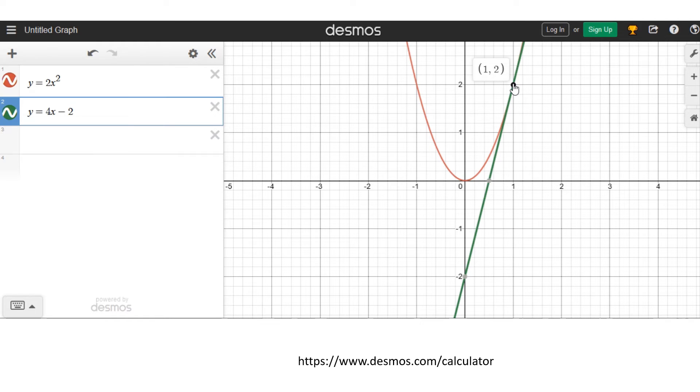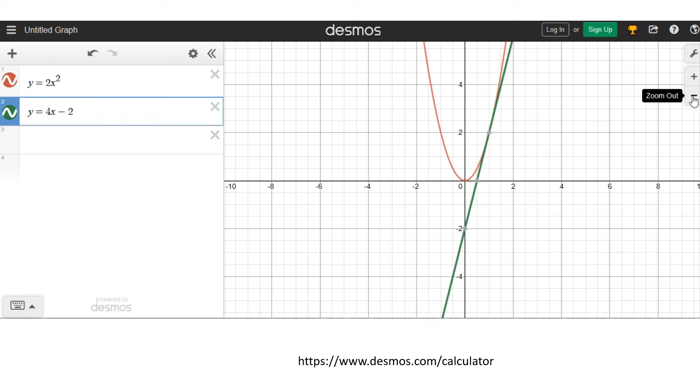This is one point of intersection that you see here, and there seems to be just one point of intersection. You can click here, and (1, 2) is the point where the two curves—the parabola and the straight line—are meeting.